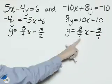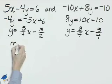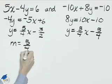As we can see, the slopes of these lines are the same. We both have 5-fourths for the slope.